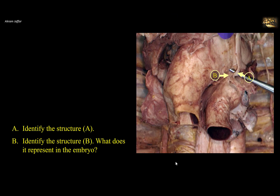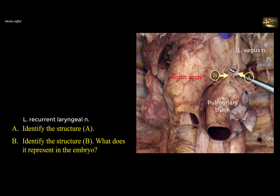Identify structure A and structure B — what does B represent in the embryo? This is a view of the superior mediastinum. Note the arch of the aorta crossing from front to back and to the left. Inferior to the arch of the aorta, you can see the pulmonary trunk dividing into right and left pulmonary arteries. Note the left vagus nerve crossing the arch of the aorta and continuing behind the root of the left lung, represented here by the left pulmonary artery. The vagus gives rise to the left recurrent laryngeal nerve, indicated by arrow A and pulled by the metal probe. This nerve loops around the ligamentum arteriosum, represented by B, and ascends to provide innervation for the larynx — hence the name 'recurrent,' because it returns to the larynx.